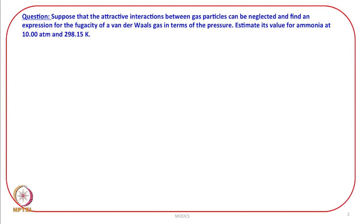Let us take up this question. Suppose that the attractive interactions between gas particles can be neglected and find an expression for the fugacity of a Van der Waals gas in terms of the pressure. Estimate its value for ammonia at 10 atmosphere and 298.15 Kelvin. Let us examine the question very carefully. It says that the attractive interactions between the gas particles can be neglected.